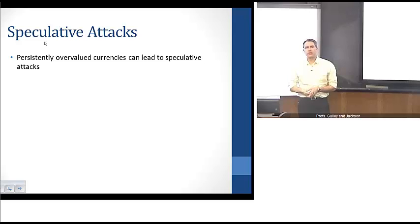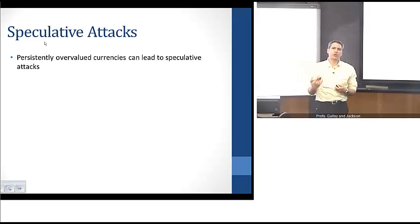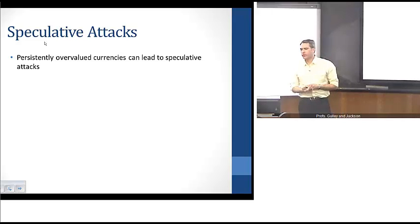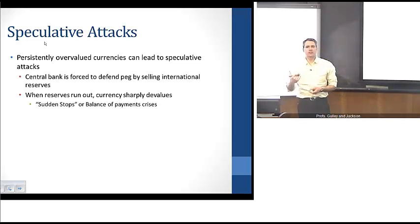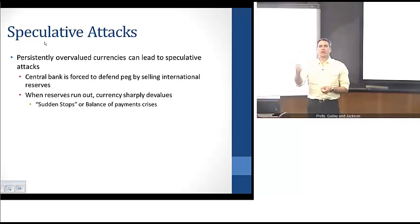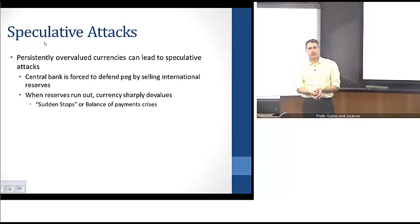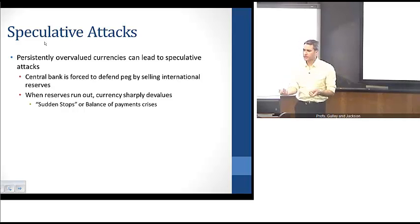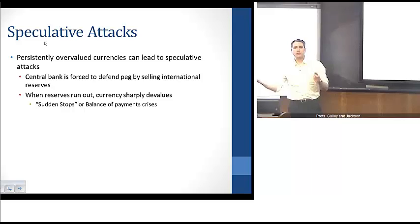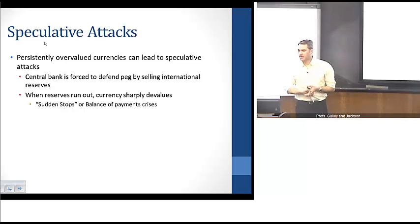One of the things we talked about in a previous video is this issue of if we have fixed exchange rates with an overvalued currency, then this persistently overvalued currency can lead to speculative attacks. The basic mechanics are that with an overvalued currency, the central bank is forced to buy up domestic currency by drawing down its international reserves, and eventually it could run out of those reserves. It would either be forced to stop defending the peg or just flat out run out of reserves, leading to a sharp currency devaluation.